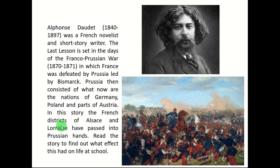In this story, the French districts of Alsace and Lorraine have passed into Prussian hands. Read the story to find out what effect this had on life at school. We always have to keep the historical background of this chapter in mind — a war was fought between France and Prussia and Prussia won. Prussia in the past consisted of three modern countries: Germany, Poland and parts of Austria. This country doesn't exist now; Germany, Poland and Austria are separate and independent countries.